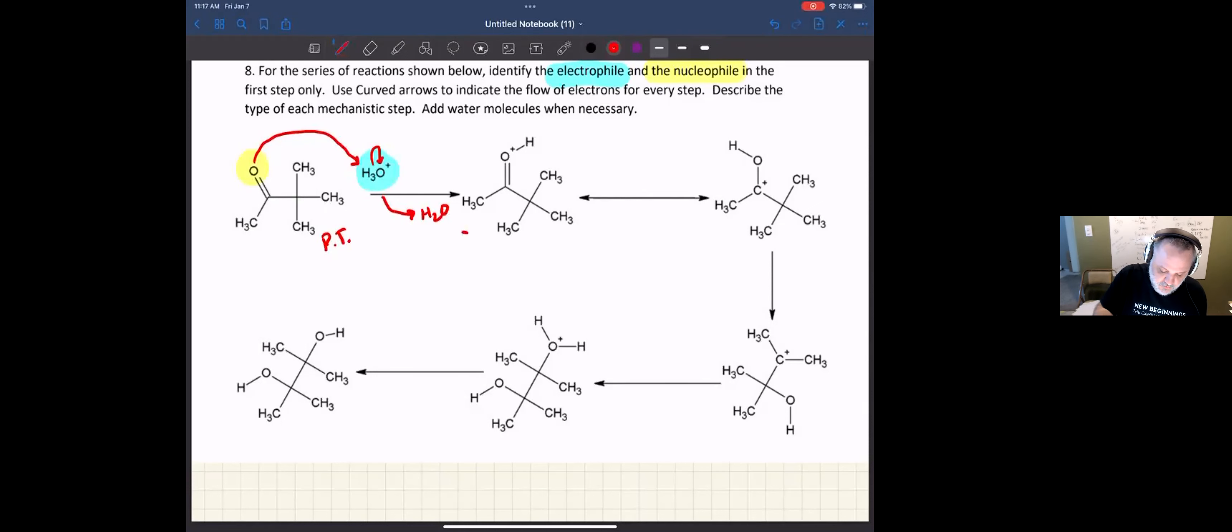This one already had a double-headed arrow, and double-headed arrows represent resonance. And so here's the resonance that's happening here so that the positive charge on the oxygen can be delocalized to the carbon.